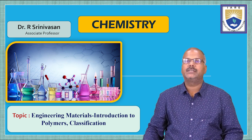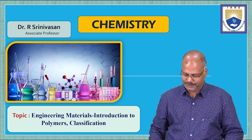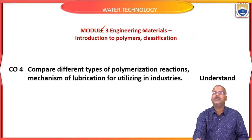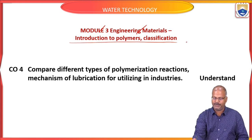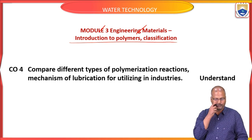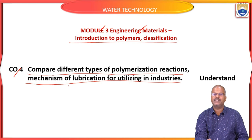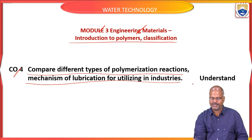We will see polymers — introduction and its classification — under Module 3 of Engineering Materials. This is Course Outcome 4: compare the different types of polymerization reactions for utilizing in industries. Lubricants will come next. The Bloom's taxonomy level is 'Understand.'